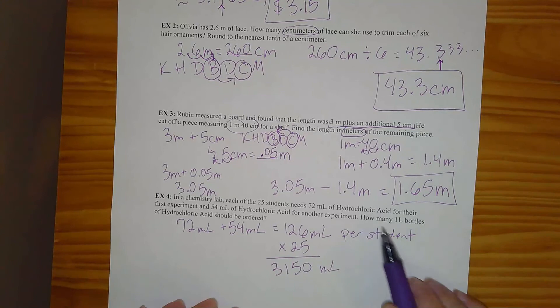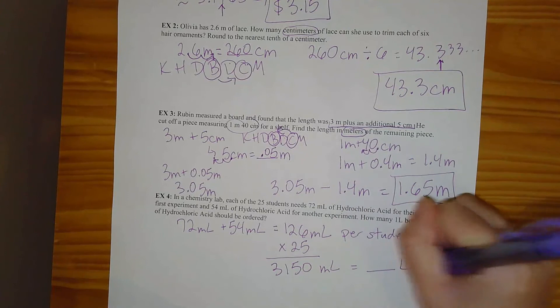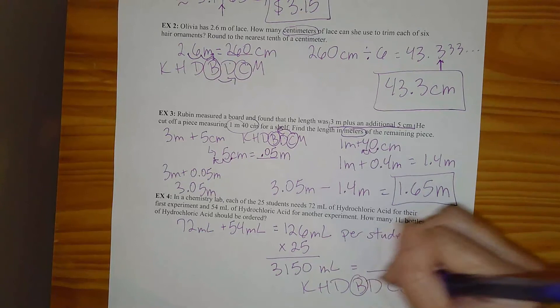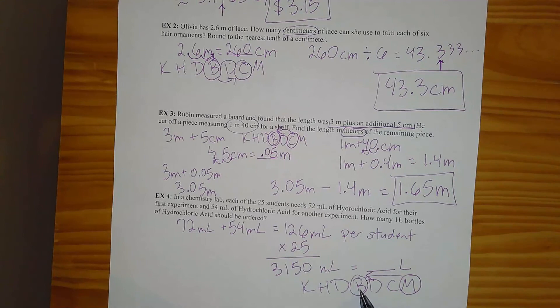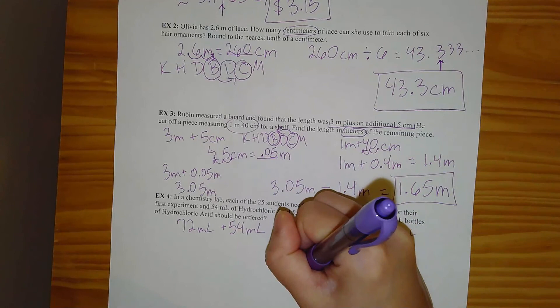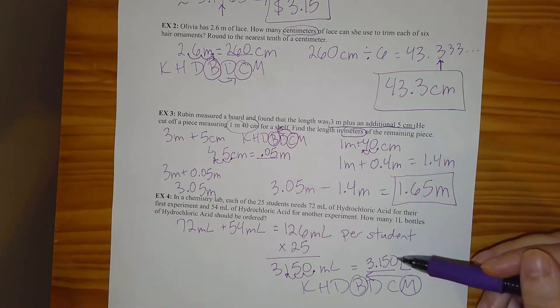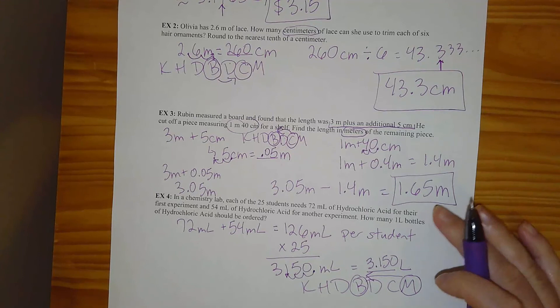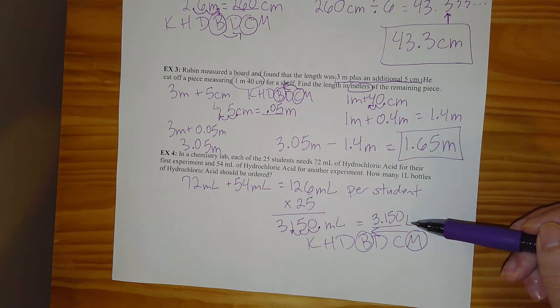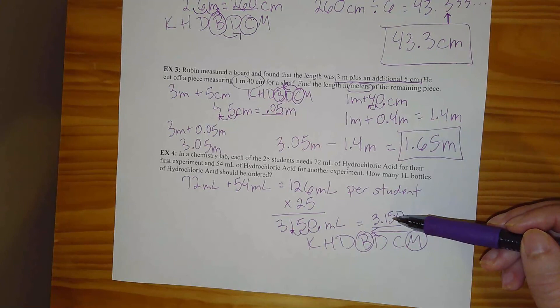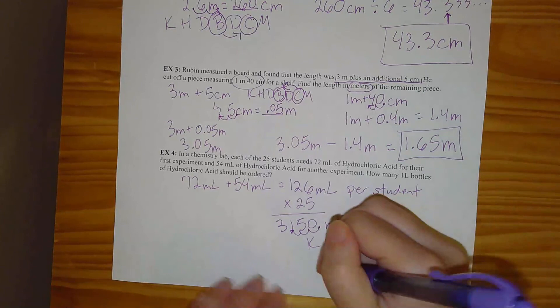Then it asks how many one-liter bottles, so I need to go from milliliters to liters (the base unit) — moving my decimal three spaces to the left gives 3.150 liters. Now, should we round down to three or round up to four? If we only got three liters, we wouldn't have enough — somebody would be missing hydrochloric acid. Even though 3.15 rounds down mathematically, we actually need an extra bottle to make sure everybody has enough. So we're going to need four bottles.